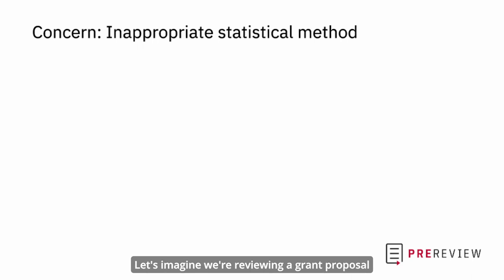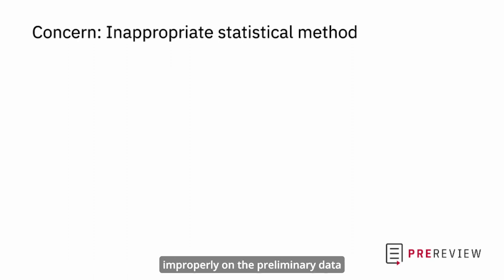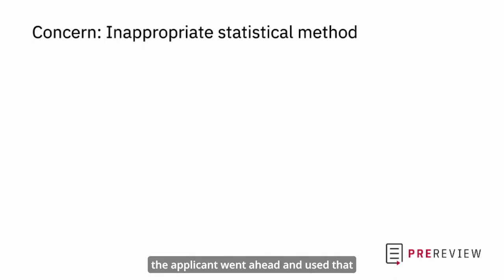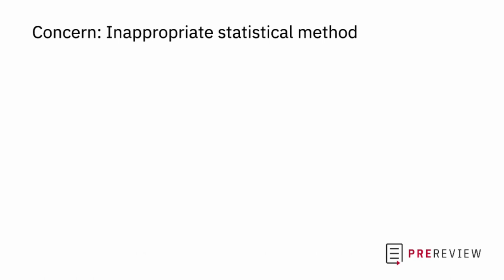Let's imagine we are reviewing a grant proposal, and one of the concerns we identified in step three is that we believe a particular statistical test has been used improperly on the preliminary data to test the hypothesis. We think that if the applicant went ahead and used that test in the proposed work, the interpretation of the results would be compromised. How would you go about writing such feedback?